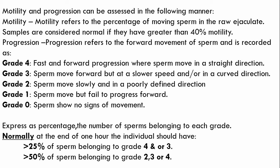Grade 4: fast and forward progression where sperm moves in a straight direction. Grade 3: sperm moves forward but at a slower speed and/or in a curved direction. Grade 2: sperm moves slowly and in a poorly defined direction. Grade 1: sperm moves but fails to progress forward. Grade 0: sperm shows no signs of movement. Normally, the individual should have more than 25% of sperms in Grade 4 and/or Grade 3, and more than 50% of sperms in Grade 2, 3, or Grade 4.